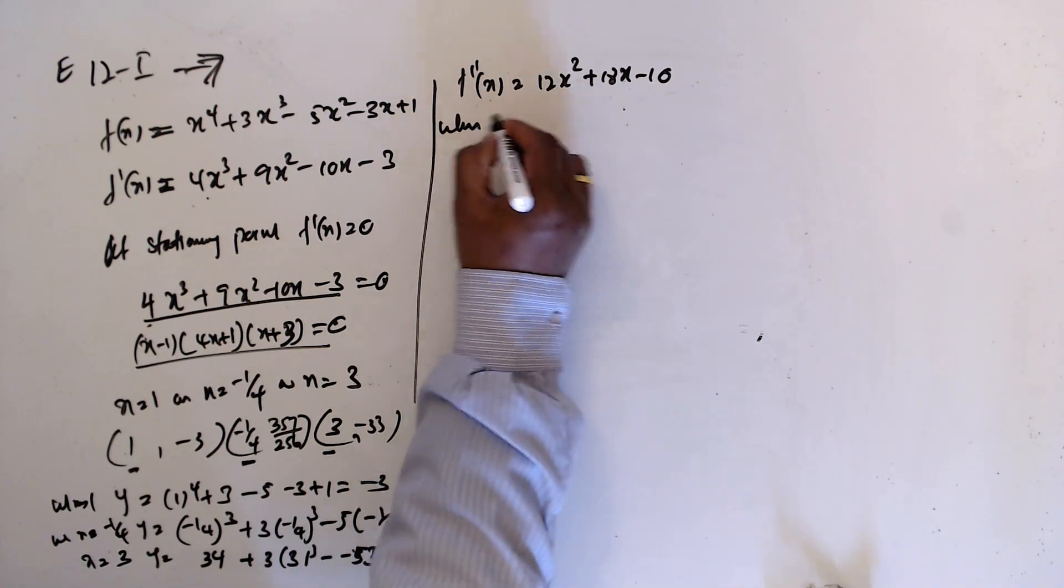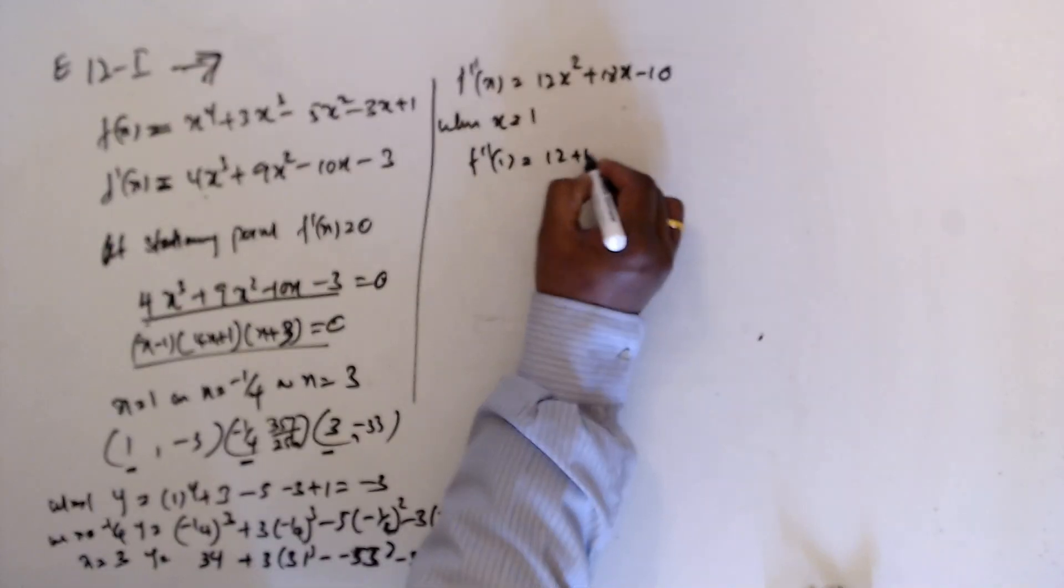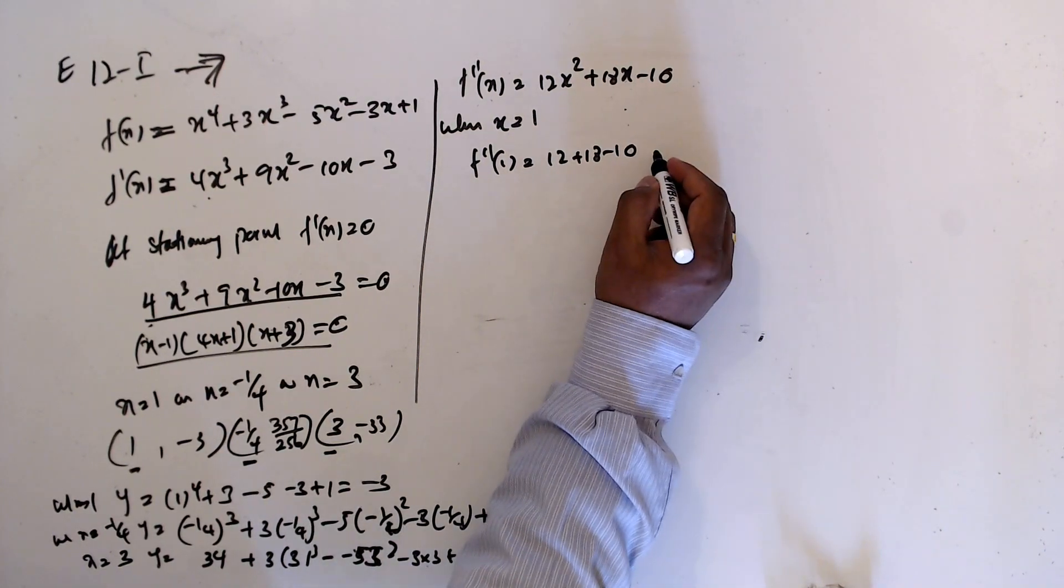When x equal 1, f double prime 1 equal 12 plus 18 minus 10.